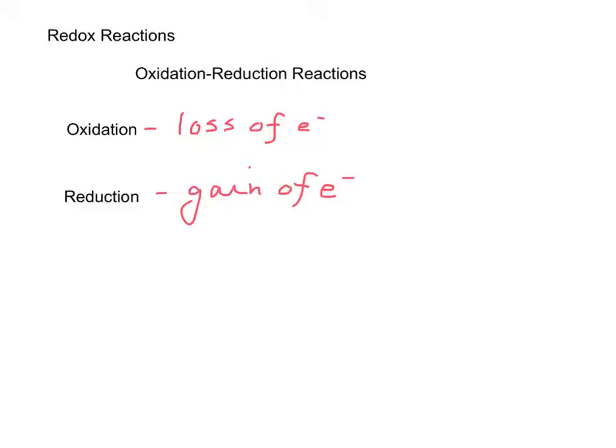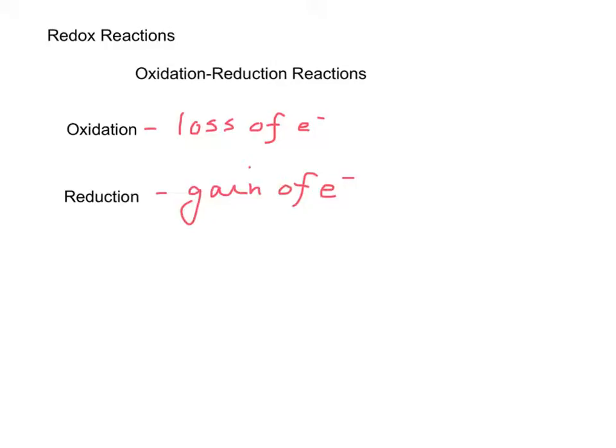In order to work with redox reactions, you need to assign oxidation numbers. It helps to keep track of where the electrons are going, tells us what's oxidized and what's reduced, and helps to balance the equations more easily. So let's learn the rules for oxidation numbers.